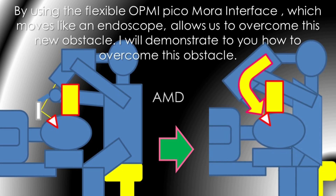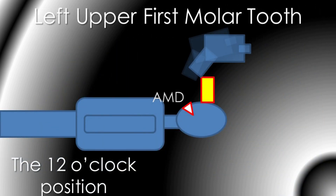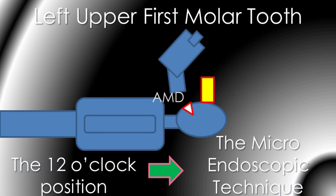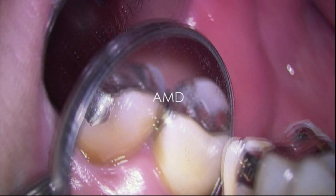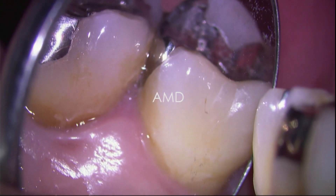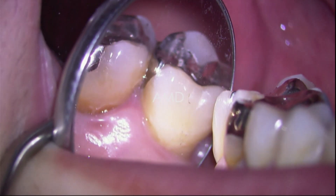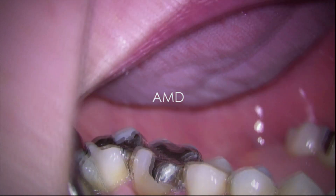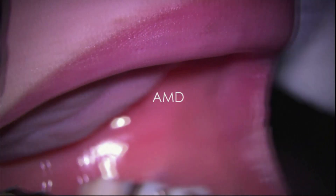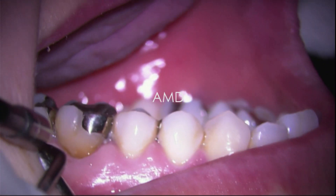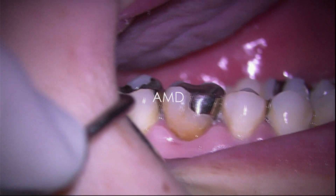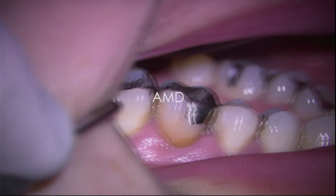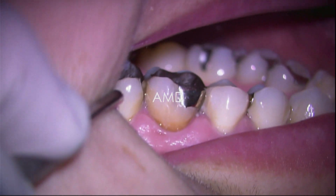I will demonstrate how to overcome this obstacle. Left upper first molar tooth. This is the conventional positioning. By changing the positioning using the microendoscopic technique, we achieve a direct view and can use both hands during treatment.